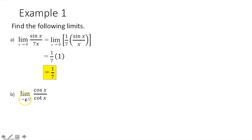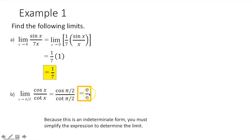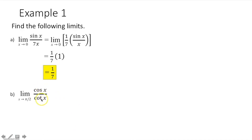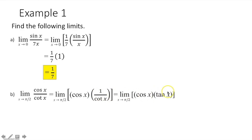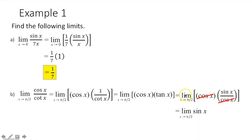Part B: find the limit as x approaches π/2 of cosine of x over cotangent x. First, try substituting π/2 for x. Cosine of π/2 is 0, and cotangent of π/2 is 0, so we get 0 over 0 — an indeterminate form. We rewrite cosine of x times 1 over cotangent x, and 1 over cotangent of x is just tangent of x. Rewriting tangent as sine of x over cosine of x, the cosines cancel, leaving the limit as x approaches π/2 of sine of x. Plugging in π/2 gives us 1.